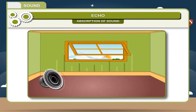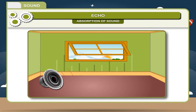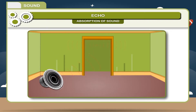Sound energy is absorbed by acoustically soft materials that sound waves encounter. An open window is an example of 100% sound absorption, i.e., no reflection, whereas bathrooms have hard reflecting surfaces and therefore very low sound absorption properties.